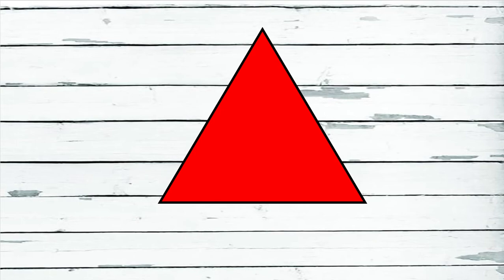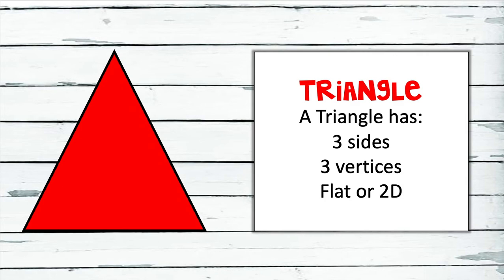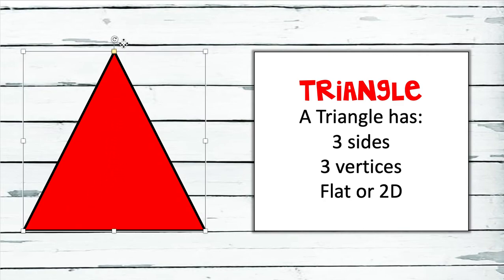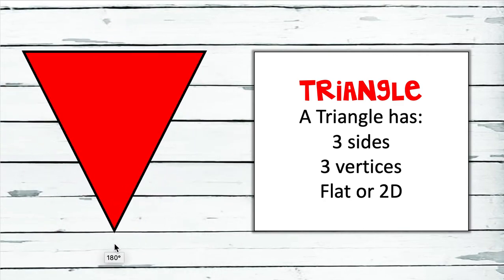If you were to describe this shape, what would you say? Be as descriptive as you can using math words like sides, vertices, and even the shape's name. Pause this video if you need to think about it. You probably thought to yourself that this is a triangle. A triangle has three sides and three vertices. This shape is flat or 2D. Even when we turn it, it's still a triangle.